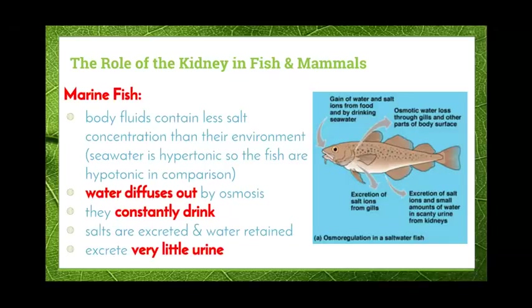The salt has to be excreted while the fish tries to retain as much water as possible. Salt is excreted across the gills as well as in urine. However, water is retained as much as possible, so the urine produced is quite concentrated — it has very little water but very high levels of salt.